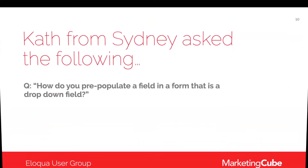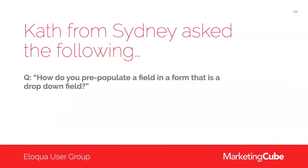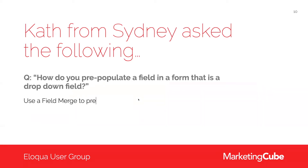The first thing we want to do is answer a question submitted by Kath from Sydney. She asks a fairly logical question: how do you pre-populate a field in a form that is a drop-down field? The answer is actually quite simple — you just need to treat that as you would a field merge with any other field merge or pre-population on your form.